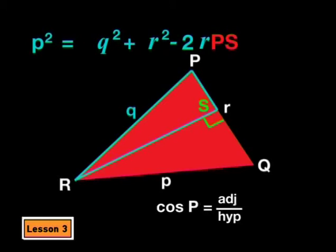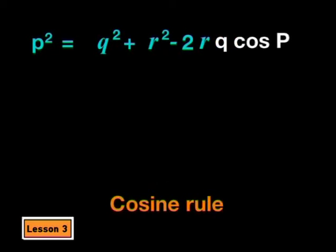Cos P equals adjacent divided by hypotenuse. So, that means PS divided by Q. We want PS on its own, so we multiply through by Q. So, that means that PS must equal Q times cos P. Now, we're nearly there. So, take the equation for PS and substitute it into the previous equation. We will replace PS with Q cos P. And that will give us the cosine rule.